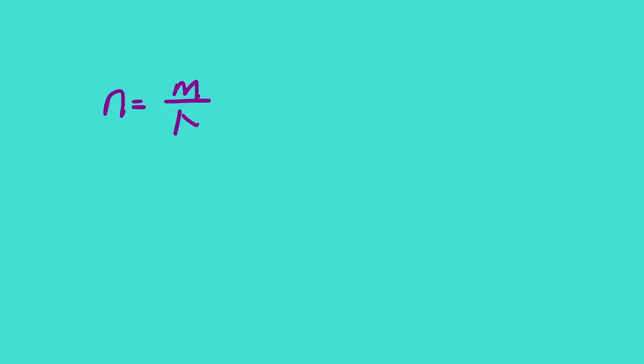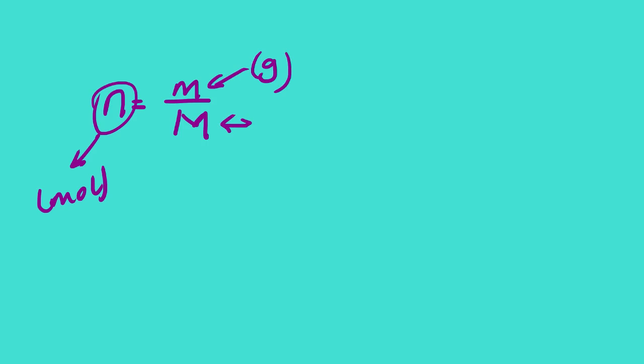The most basic equation in stoichiometry is n = m/M, where n stands for number of moles measured in moles, m is the mass of the substance measured in grams, and M is the molar mass of the substance measured in grams per mole. You can find the molar mass from the periodic table as long as you have the molecular formula of that substance.